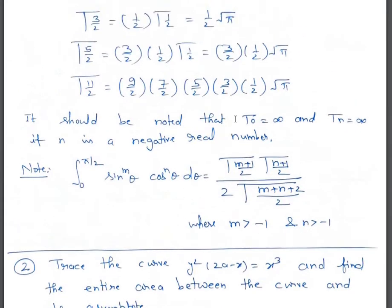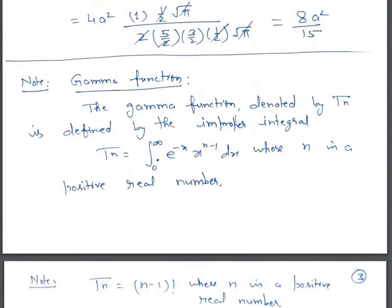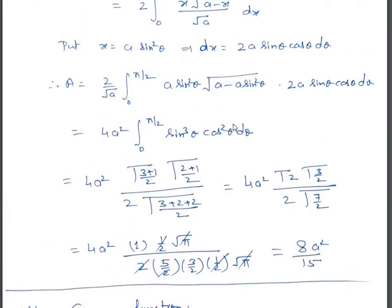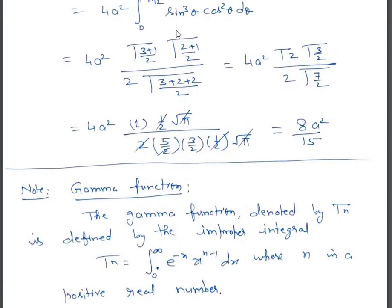We made use of this formula in the previous problem. In that example, m = 3 and n = 2. So Γ((m+1)/2) = Γ(4/2) = Γ(2), Γ((n+1)/2) = Γ(3/2), divided by 2 · Γ((3+2+2)/2) = 2 · Γ(7/2). Then Γ(3/2) = (1/2)√π, and Γ(7/2) = (5/2)(3/2)(1/2)√π. That's how we applied the formula.